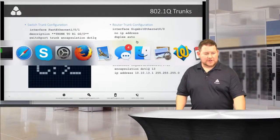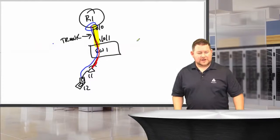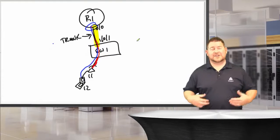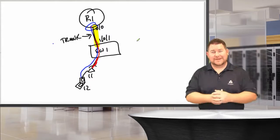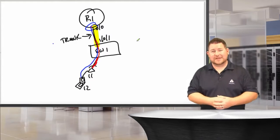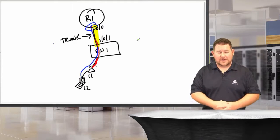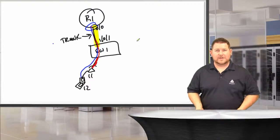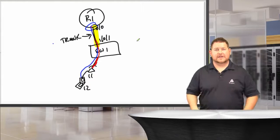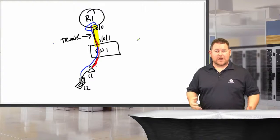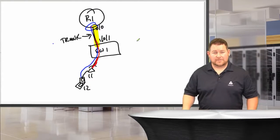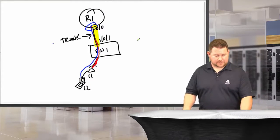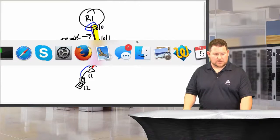This setup is affectionately known as a 'router on a stick' — you're routing all these different VLANs to one single point, and that router routes between those VLANs at layer three.